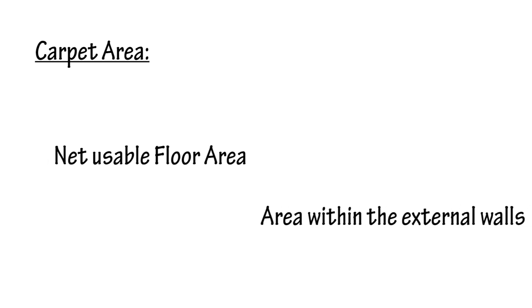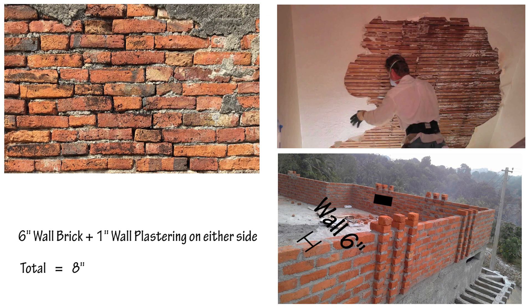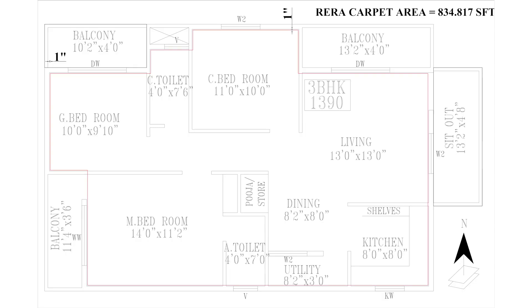As per RERA, carpet area is defined as the net usable floor area of a flat — also described as the area within the external walls. RERA also states that we need to leave a one-inch gap from the external wall to remove the area covered by plastering. A wall might be six inches, but after plastering it may come up to eight inches.